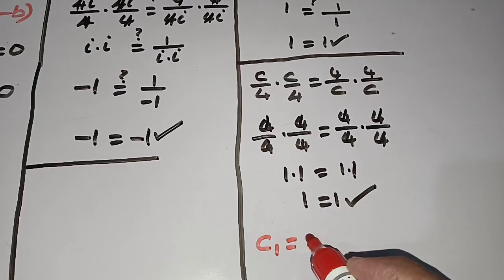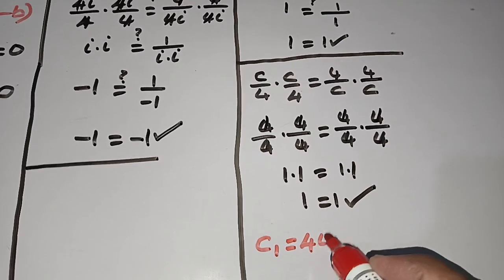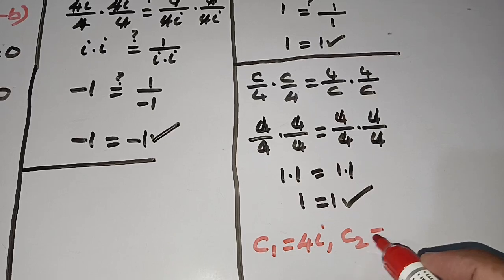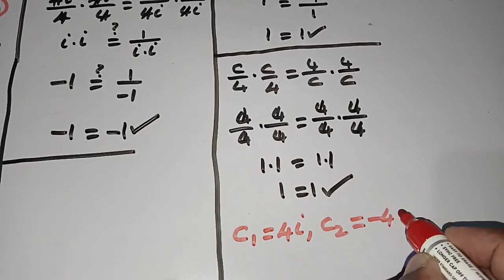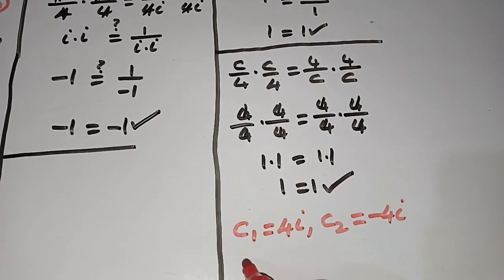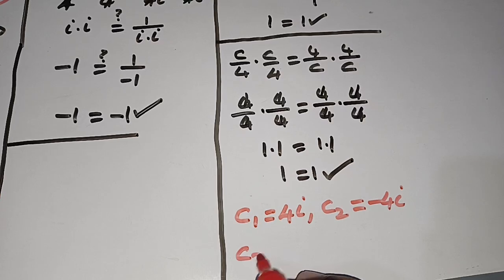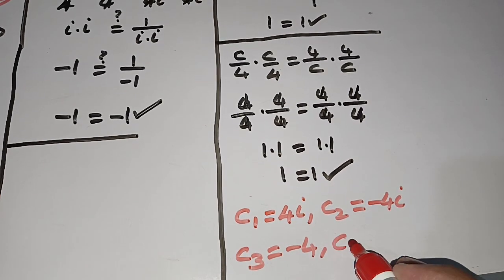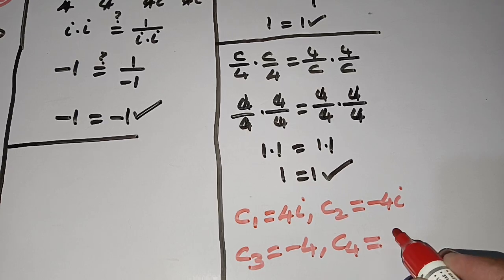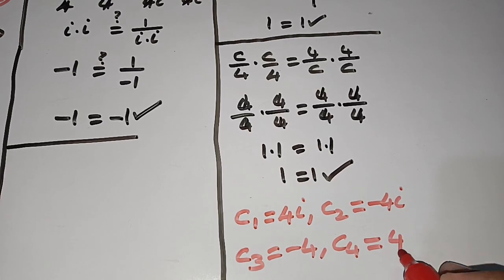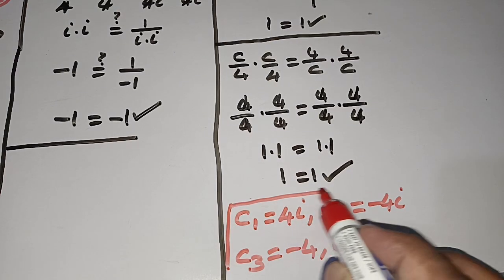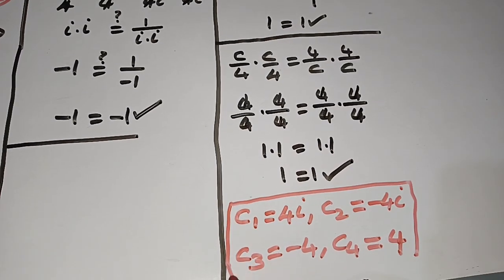The four solutions are: c₁ = 4i, c₂ = -4i, c₃ = -4, and c₄ = +4. All four values of c satisfy the given equation.